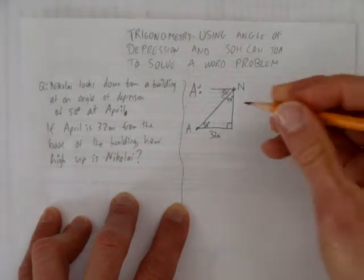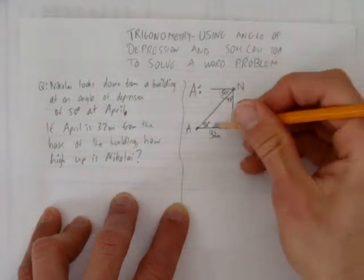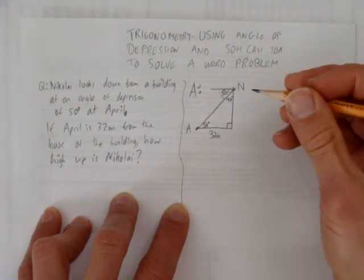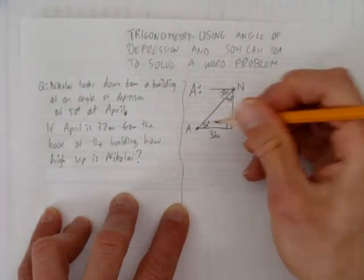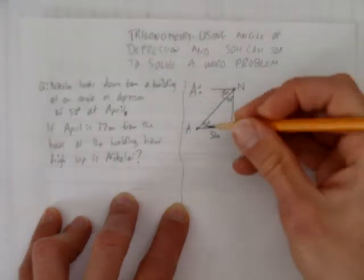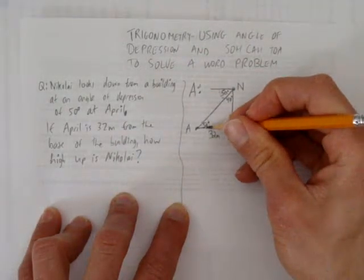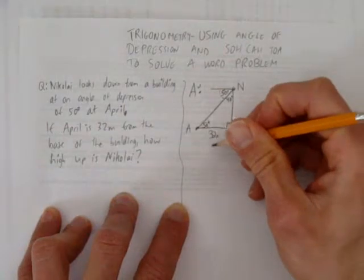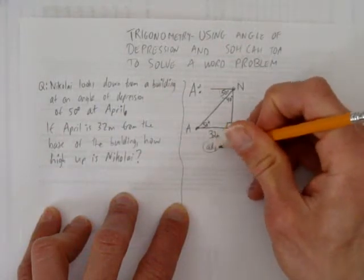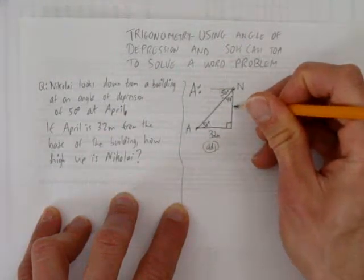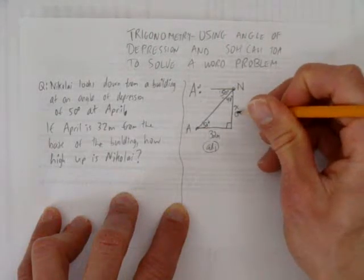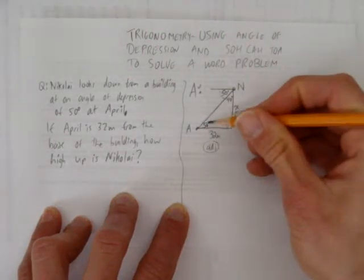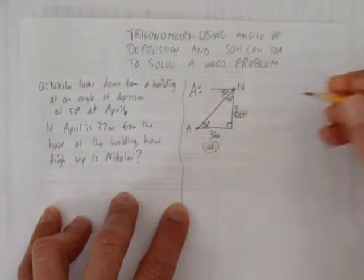OK. Well, now we have two angles to choose from. It doesn't matter which one you pick. Let's say we pick this 50 in here. If we pick this 50, then the side we have, 32 meters, is adjacent. And the side we're looking for, the height of the building, let's call it x, is the opposite side. So what formula uses opposite and adjacent?